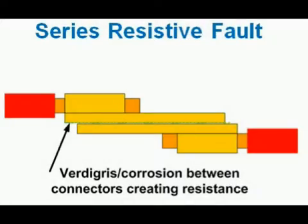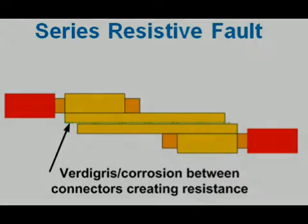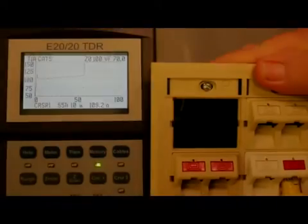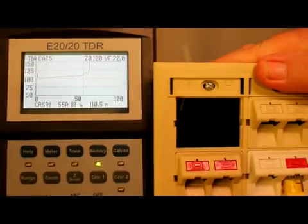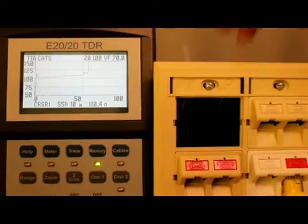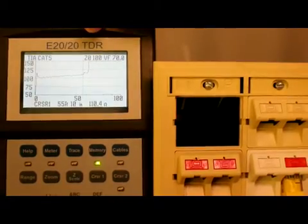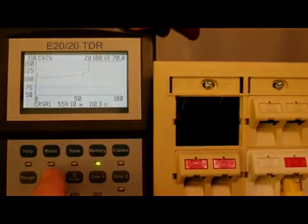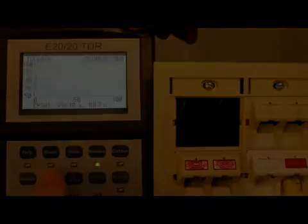Another issue is series-resistance faults. These are generally caused by dirty, contaminated, or corroded connection points that add resistance to one or both conductors in a pair. The result on a STEP TDR is a sharp upward step in the trace — that's the resistance being measured at the fault and added to the impedance. Again, another unwanted reflection and attenuation point along the pair's length that needs correction.